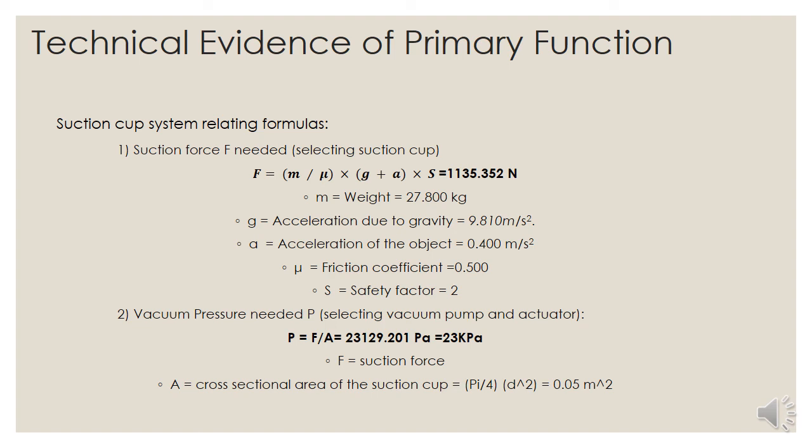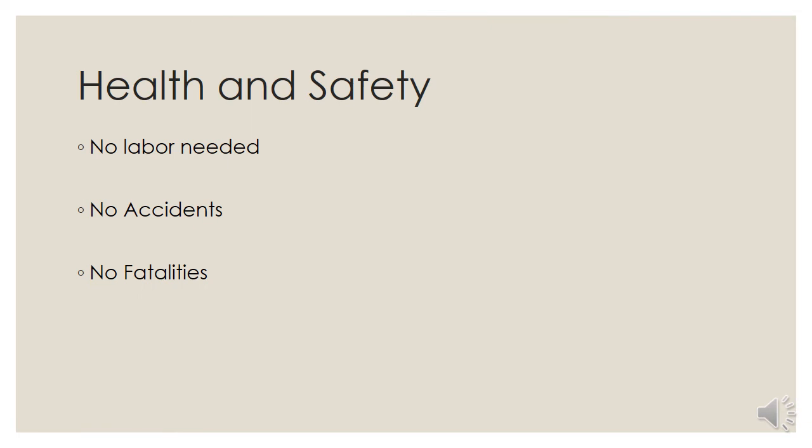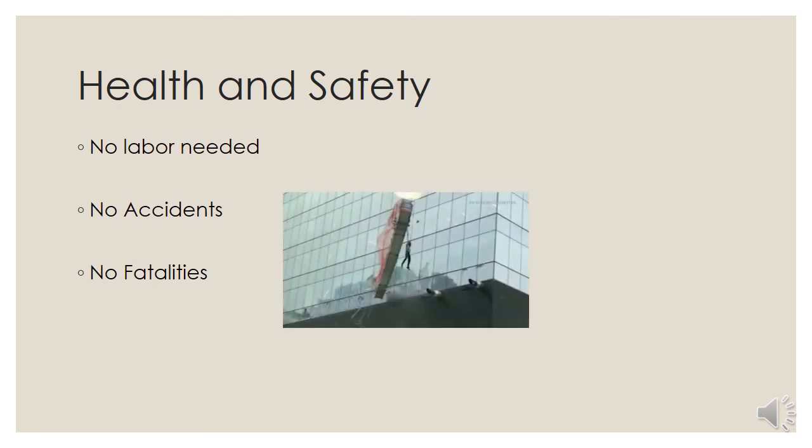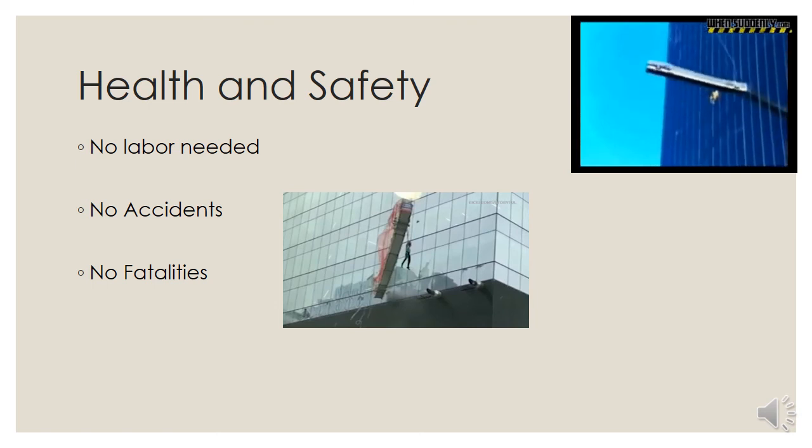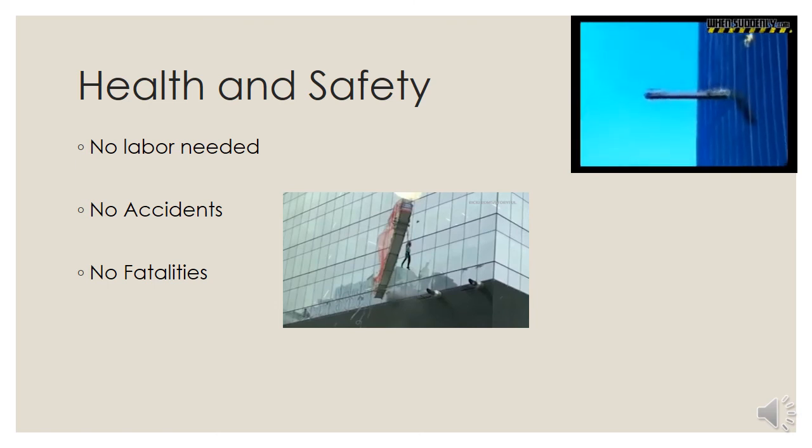My partner Bramja will talk about technical evidence of other needs and impact. Moving on with health and safety, one of the main reasons why the automated window cleaner was made was to make high-rise window cleaning safer. Research shows that one person was killed on average every year in the last decade, and this is in the US alone. Over 80 high-rise window cleaning washing accidents have been reported in the past 15 years, and more than 50% of these accidents were fatal. Implementing an automated system such as the one shown will completely eliminate the need of labor workers and hence bring the number of accidents to zero.